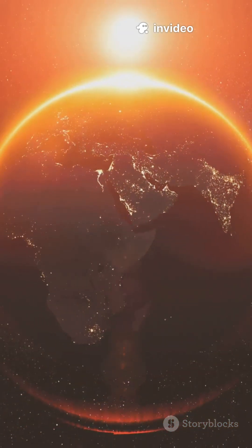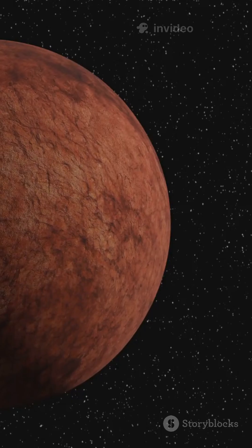Even weirder? Venus spins backward compared to most planets. That means the Sun rises in the west and sets in the east over there.